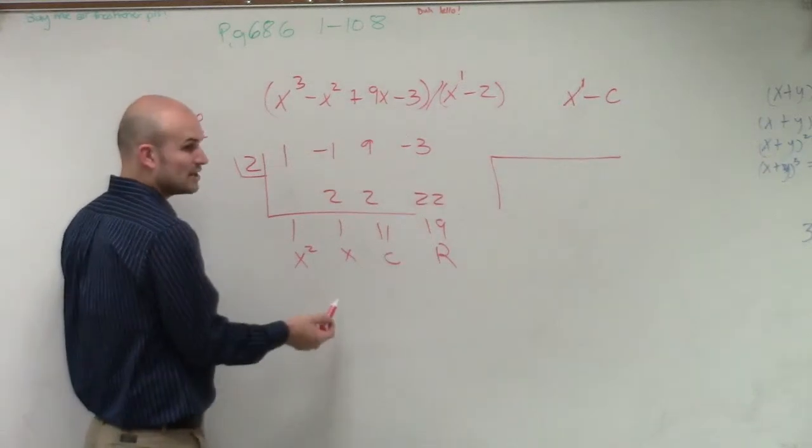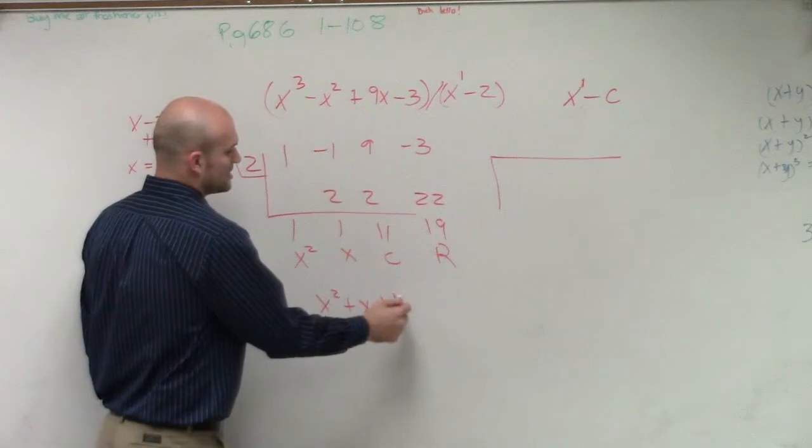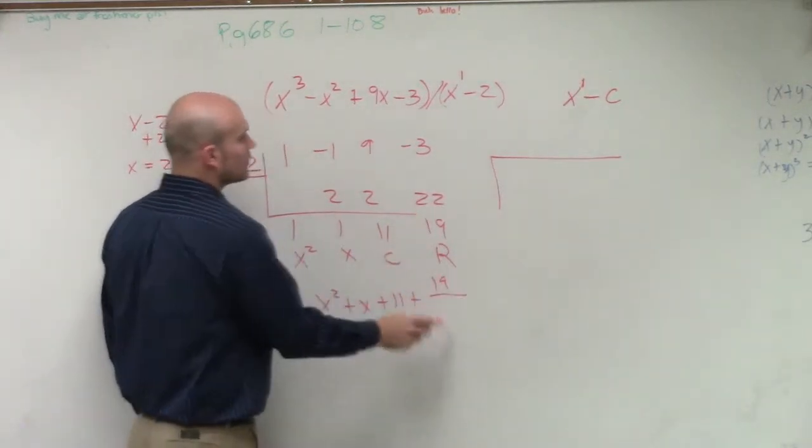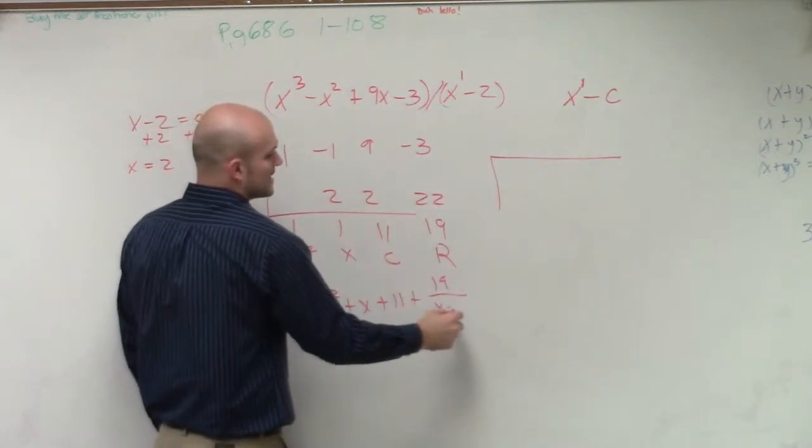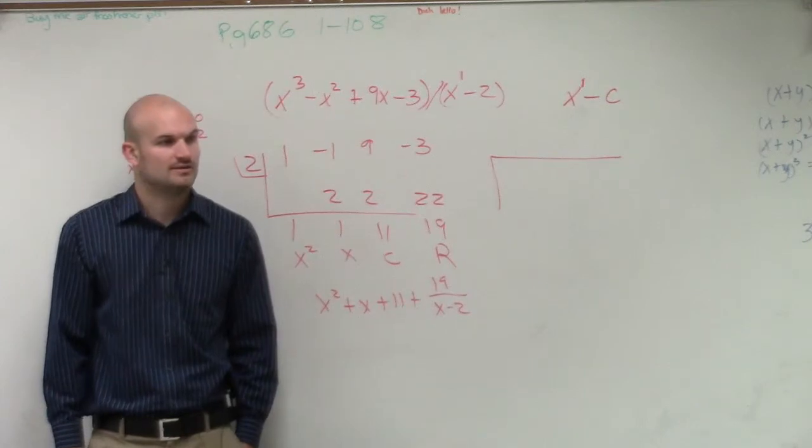So our final equation, our divisor, our dividend is going to be x squared, plus x, plus 11, plus your remainder, 19, over our divisor, which is x minus 2. Okay?